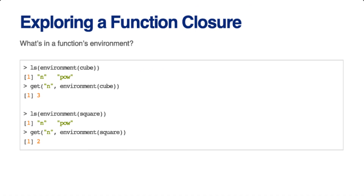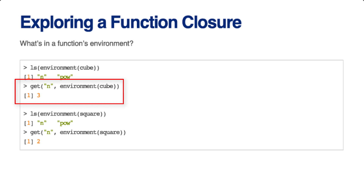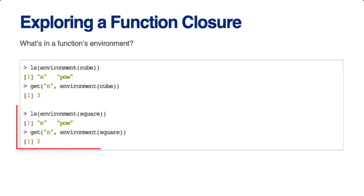How do you know what's in a function's environment? You can look in the environment in which the function was defined by calling the ls function. If I call ls on the environment for cube, you can see there's an object called n inside the cube function. Using get on n, you'll see that the value of n is equal to three — that's how cube knows to raise to the third power, because it's stored in its closure environment. Similarly, the environment for square has the same objects, but the value of n is two.